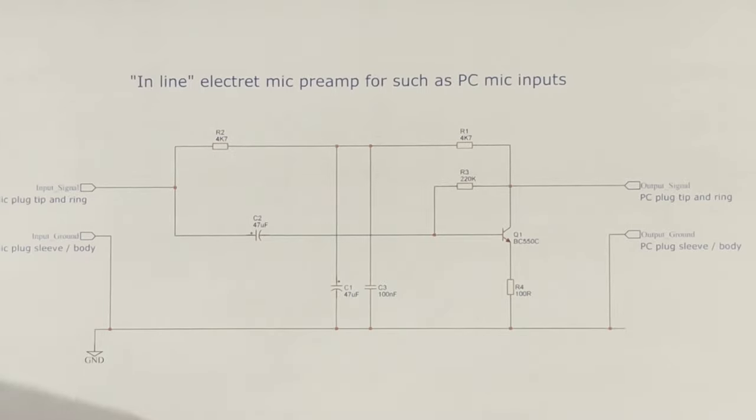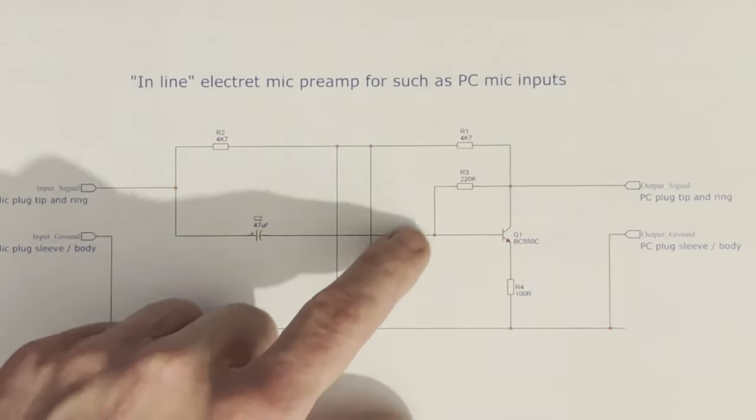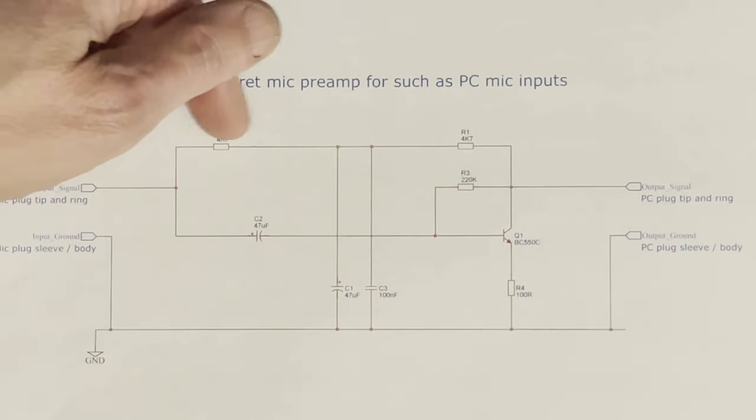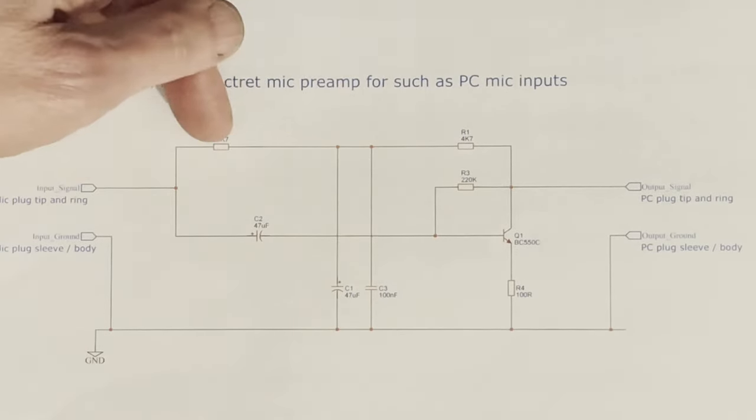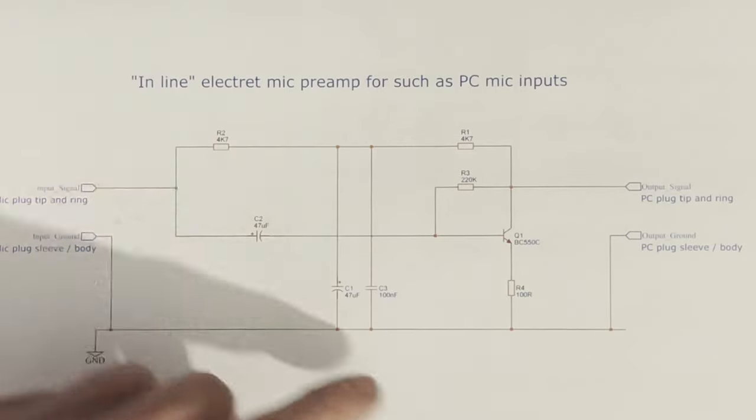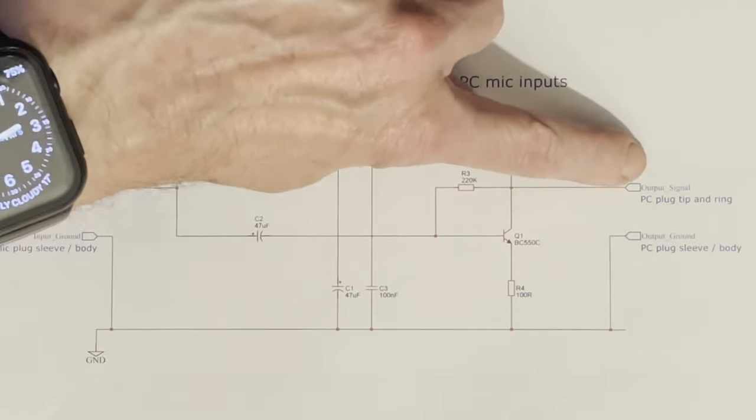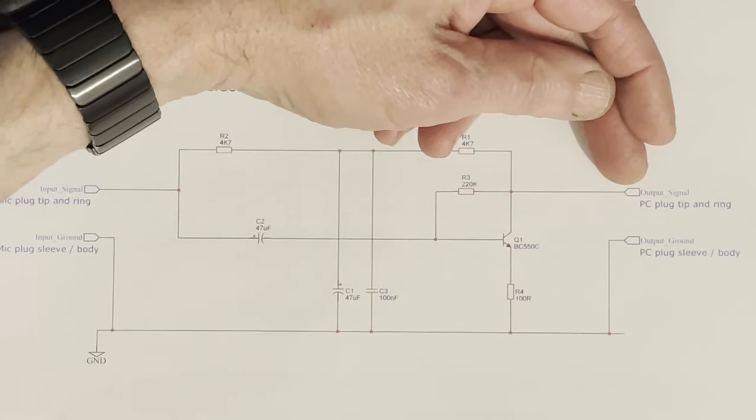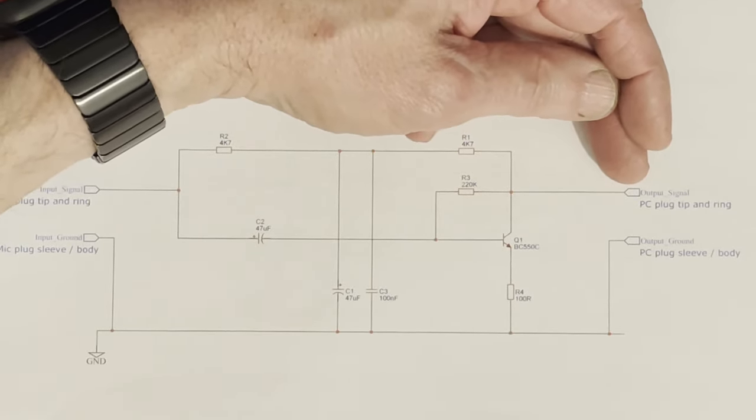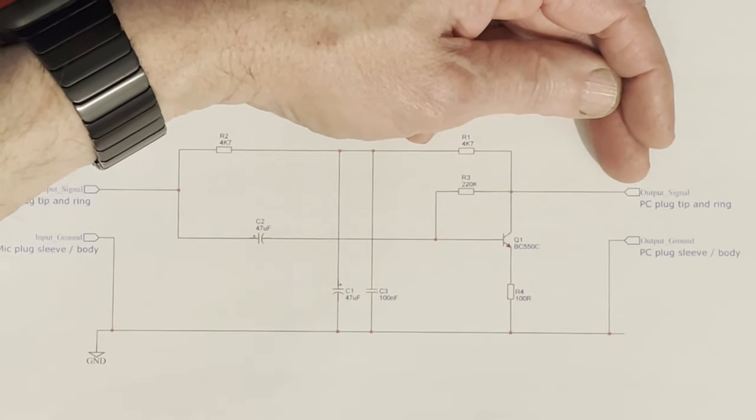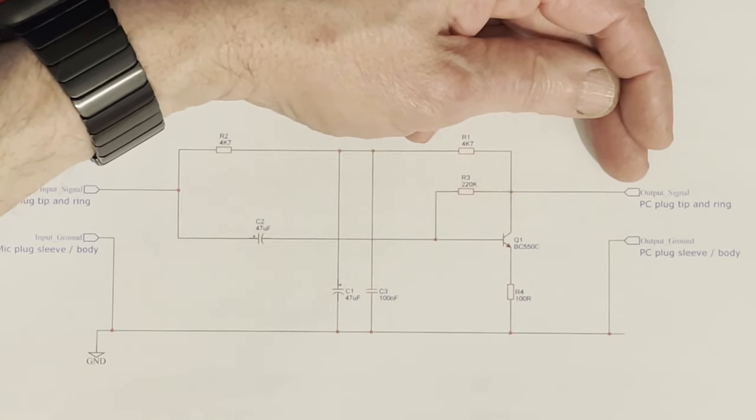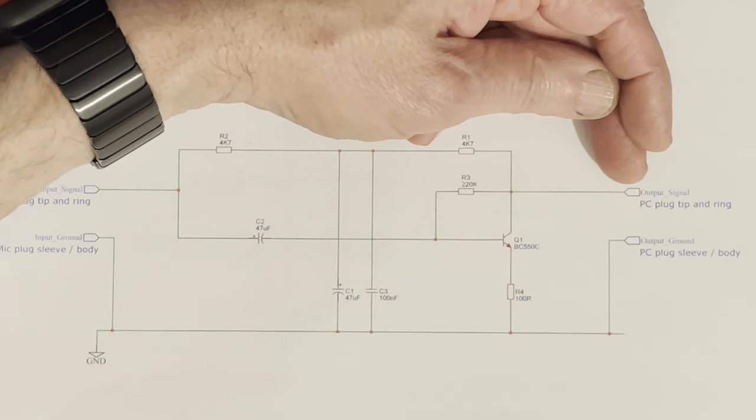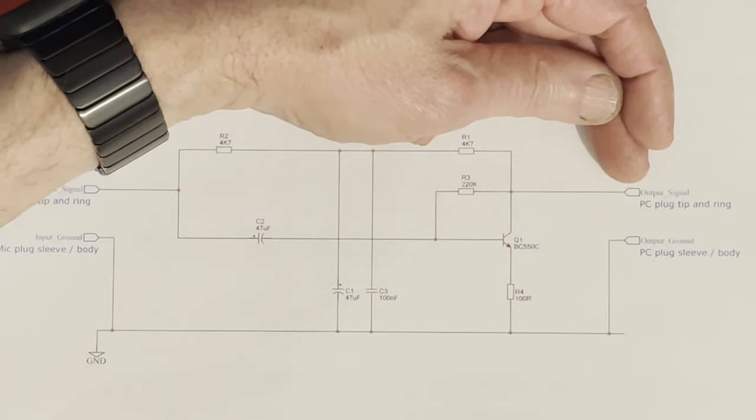Depending on the microphone capsule you try it with, you might have to change the bias resistor, not 220k, or you might have to change the power feed resistor slightly because it's relying on power coming from the PC end, which on a classic PC microphone input has a 470 ohm to 5 volts in the computer or the sound card.